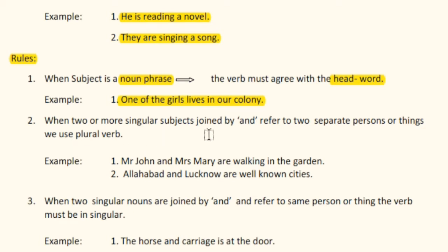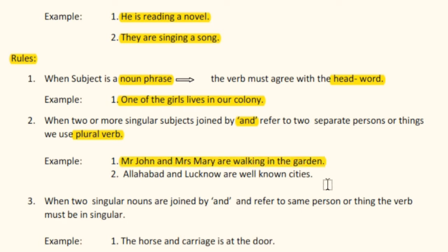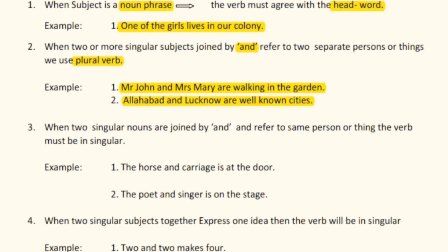Rule number two: when two or more singular subjects joined by 'and' refer to two separate persons or things, we use a plural verb. For example, 'Mr. John and Mrs. Mary are walking in the garden.' Also, 'Allahabad and Lucknow are well-known cities.' Here Mr. John and Mrs. Mary are two persons, and Allahabad and Lucknow are two separate cities, so plural verbs are used.